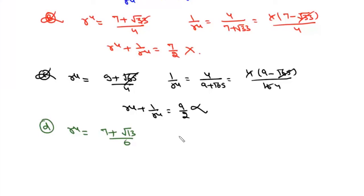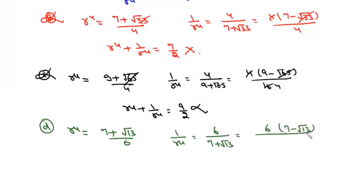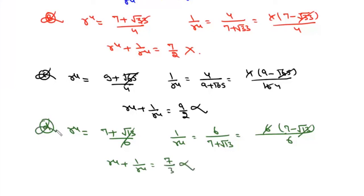For option D, R⁴ = (7 + √13)/6 and 1/R⁴ = 6/(7 + √13). Rationalizing: 6(7 − √13)/(49 − 13) = 6(7 − √13)/36 = (7 − √13)/6. Adding R⁴ + 1/R⁴, the irrational parts cancel, giving 7/3, which is also not an integer. So the only correct option is A.